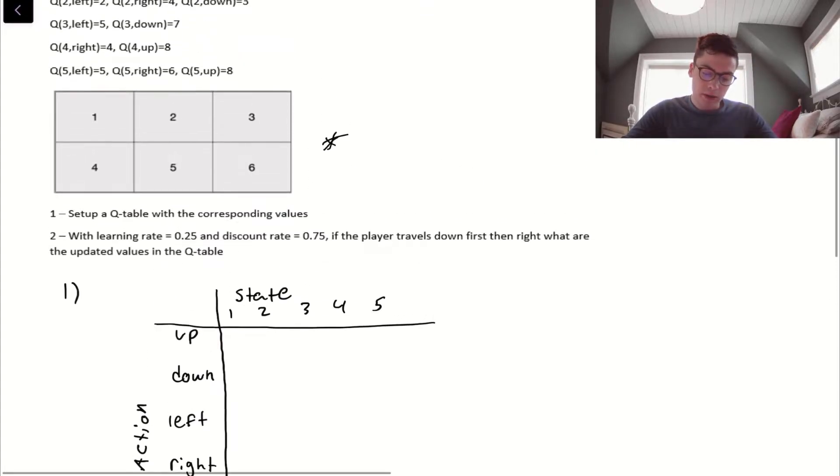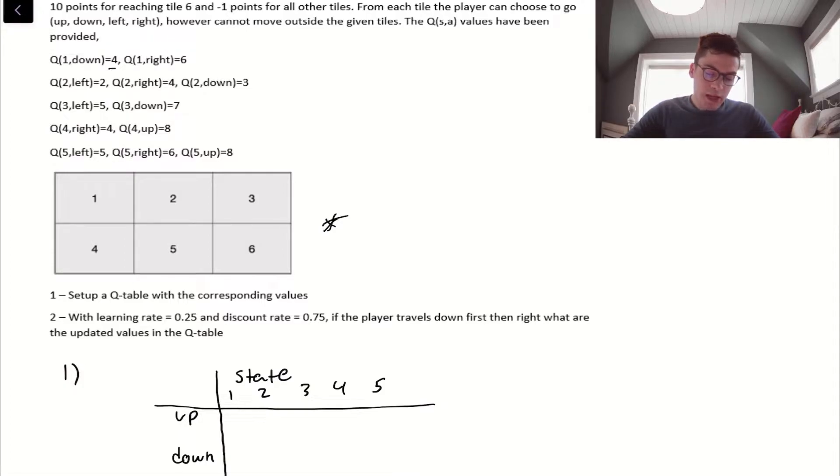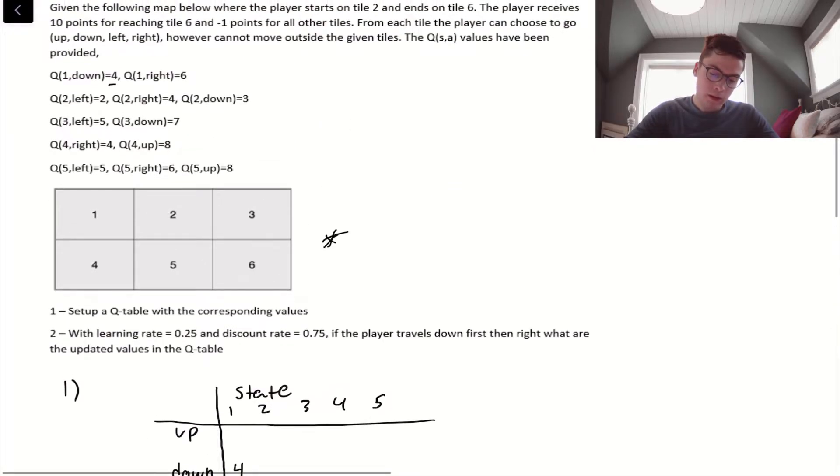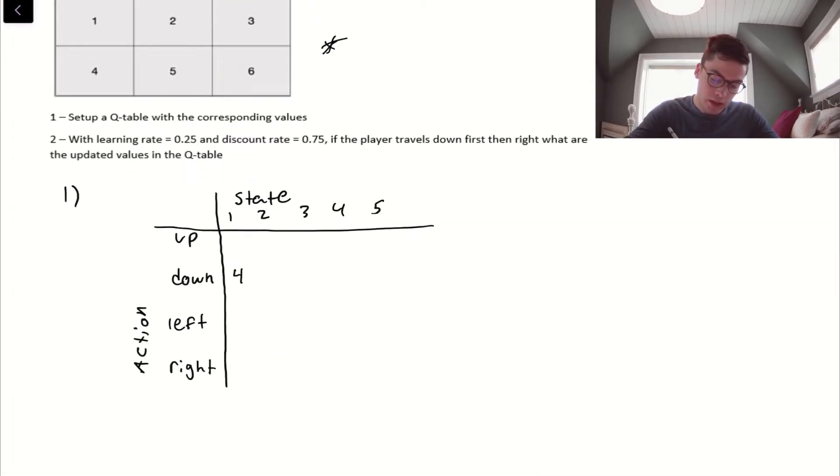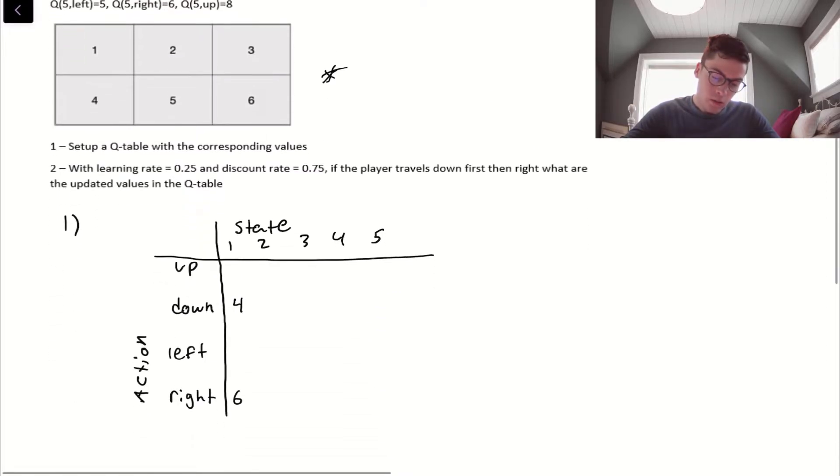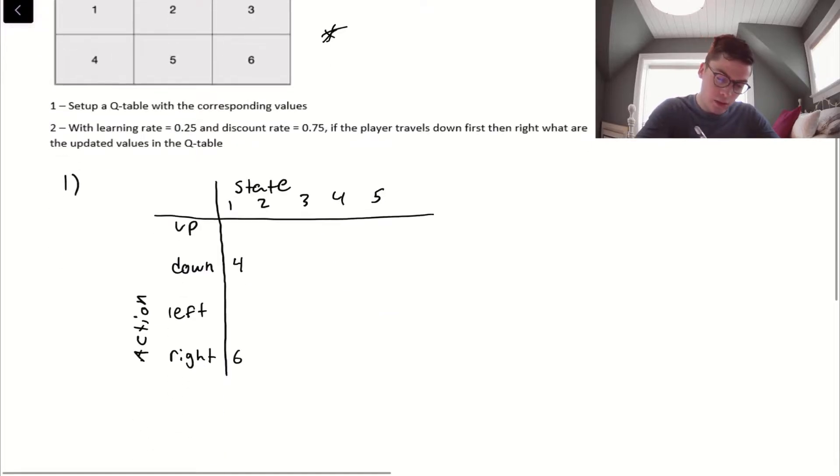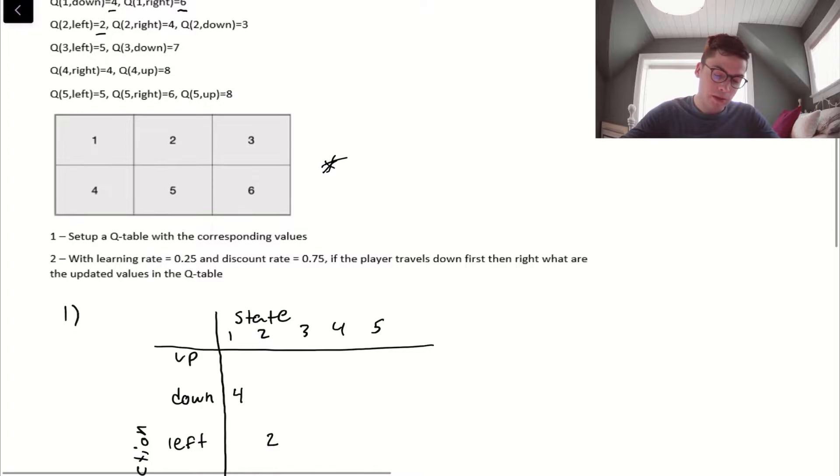If we scroll up to the Q values, let's start with 1, down, they give us 4. So, 1, down, is 4. 1, right, is 6. 2, left, is 2. And I'll speed this up, this part, as it's pretty obvious.